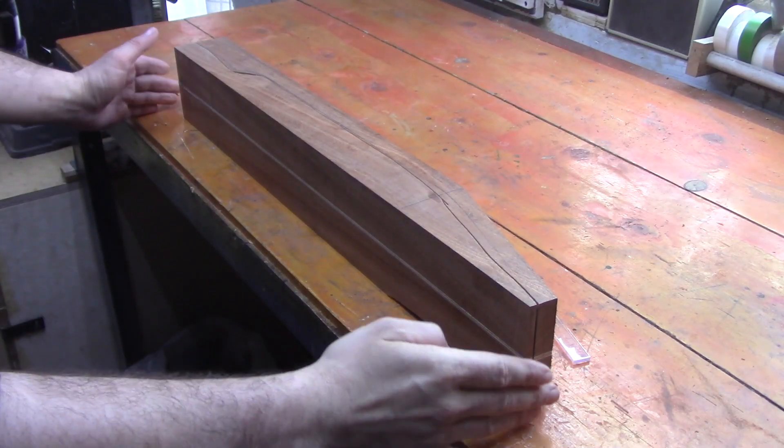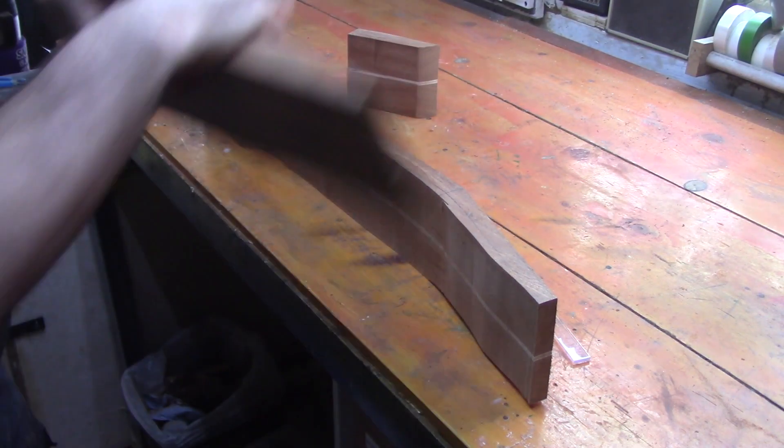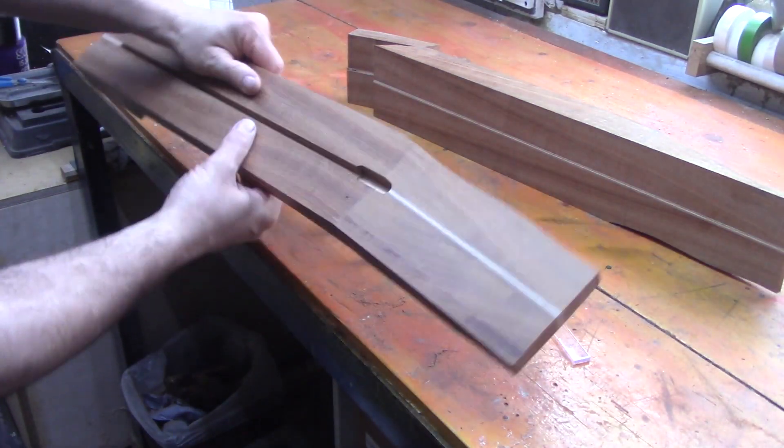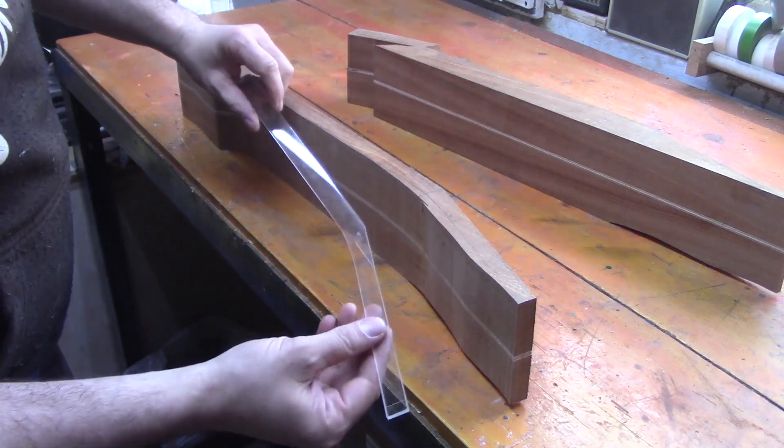That's our neck off the band saw. We've taken away all this material, leaving us with an almost vaguely neck-like shape. What we're going to do next, off camera, is take our template which is plastic and very flimsy.